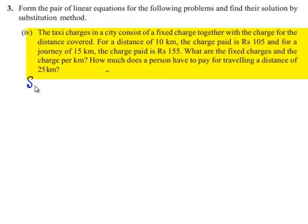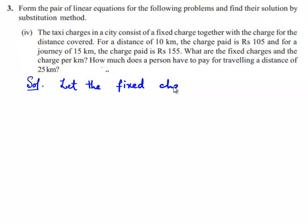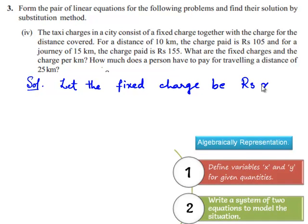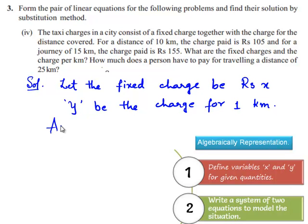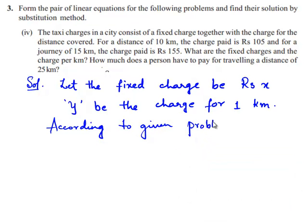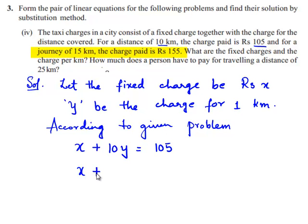So let us work out the problem. Let the fixed charge be x — that is, rupees x — and y be the charge for 1 kilometer. So according to the given problem, we can write the linear equations as: fixed charge x plus charge for 1 kilometer y, and here we have 10 kilometers, so 10y is equal to rupees 105.